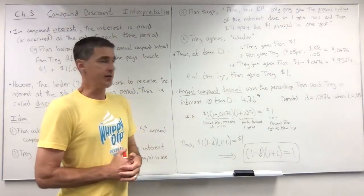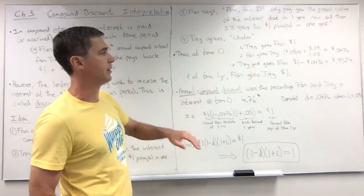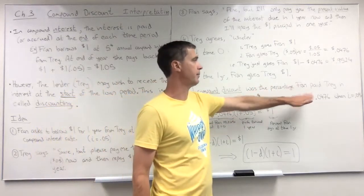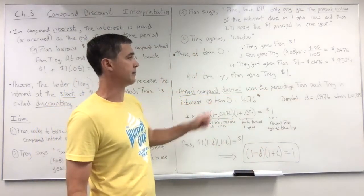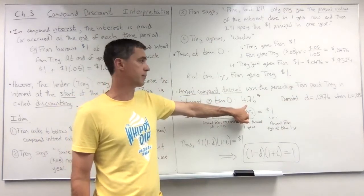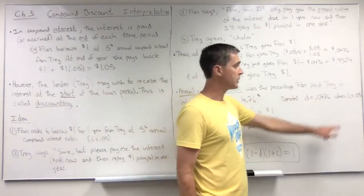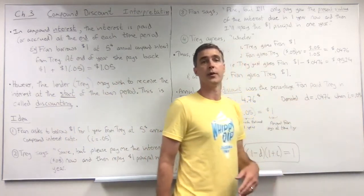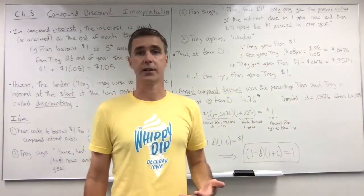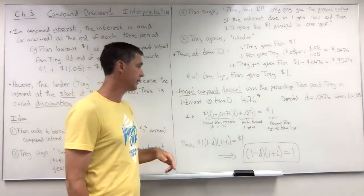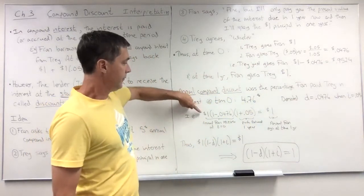So this is the annual compound discount. The annual compound discount was the percentage Fran paid Trey in interest at time zero. So that was four point seven six percent. We denote D for discount, and it was linked to the compound interest rate I, which was five percent in this case. And how exactly was it linked?